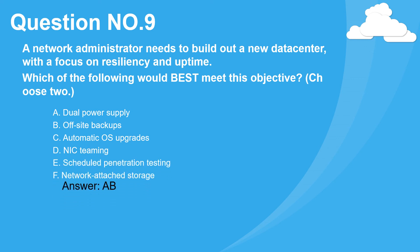Question number nine. A network administrator needs to build out a new data center with a focus on resiliency and uptime. Which of the following would best meet this objective? Choose two. A. Dual power supply. B. Off-site backups. C. Automatic OS upgrades. D. NIC teaming. E. Scheduled penetration testing. F. Network attached storage. Answer: A and D.